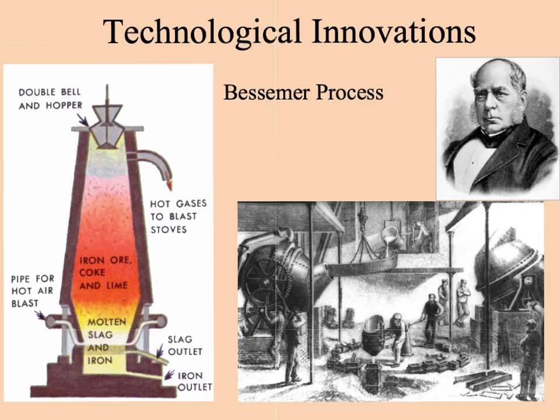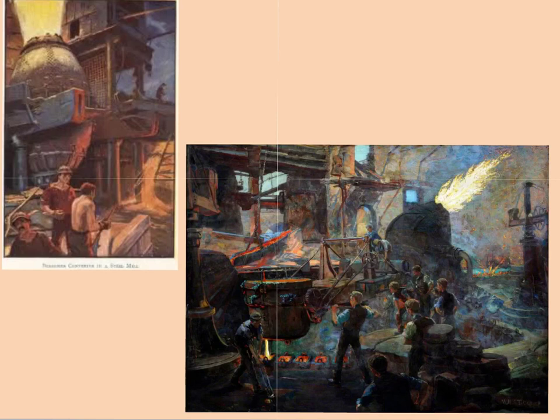The new industrial growth was based upon several inventions, technologies, and resources. One of the most important was the Bessemer process, created by Henry Bessemer in the 1850s in England, while William Kelly was working to perfect it in the United States. It took iron ore — by pumping in air while heating it, the impurities melted out — leaving steel. Steel was stronger, lasted longer, easier to work with, and became the basic building block of the modern industrial world, used in railroads, bridges, and skyscrapers.